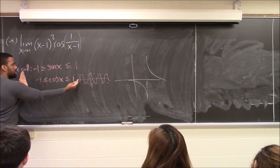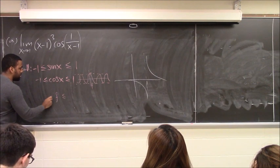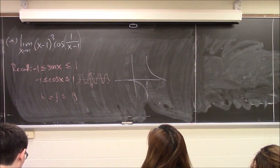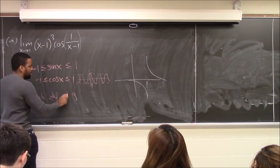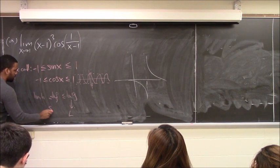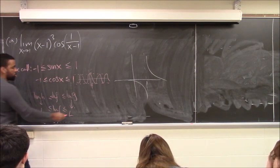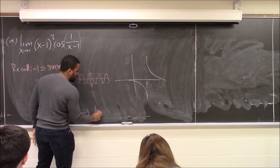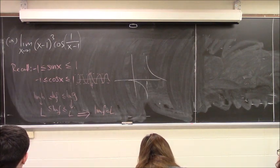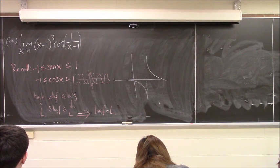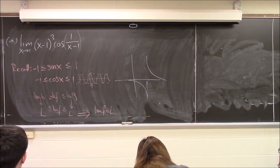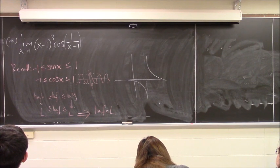This reminds you of the Squeeze Theorem — when we had a function bounded on both sides, and if we take the limit of the lower bound and the limit of the upper bound and both give the same number, then your limit of f is forced to be that number. That's what the Squeeze Theorem says. We can say the limit of negative 1 as x approaches 1 equals 0, and the limit of 1 as x approaches 1 equals 0, and this function lies between them, so it's going to be 0.